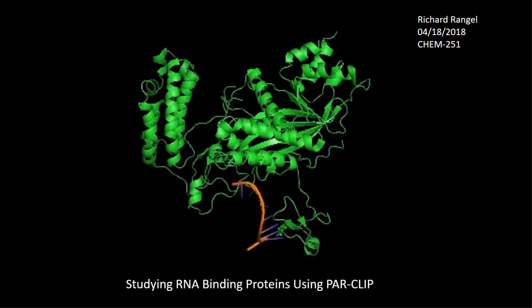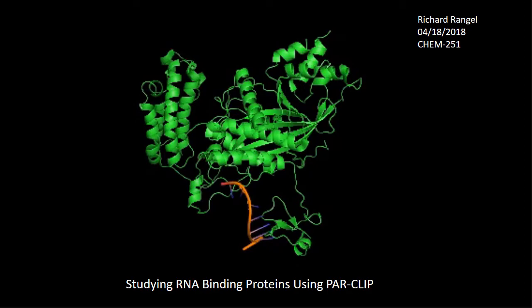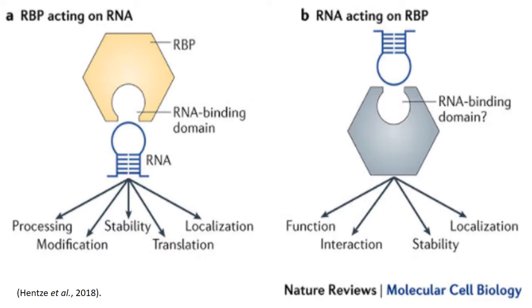RNA-binding proteins are proteins that bind to RNA to form a complex. This can change the function of the RNA or that of the protein. Some RNA-binding proteins, or RBPs, are implicated in diseases including neurodegenerative diseases like ALS and several forms of cancer. Wrongly regulating RBPs can result in changing the expression and function of proteins that cause or prevent cancers.